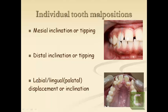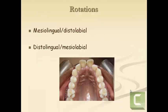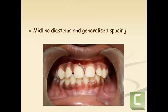Individual tooth malpositions may also include labial or lingual displacement. As seen in the figure, the lateral incisors are palatally placed. The teeth may also be rotated — for example, the upper central incisors are distobuccally or distolabially rotated. You can also have spacing, either generalized spacing or only a midline diastema.